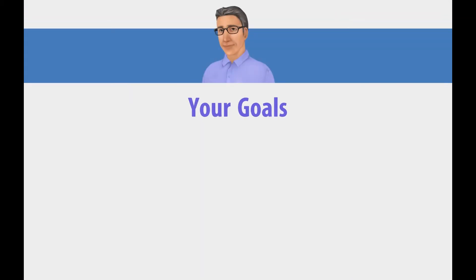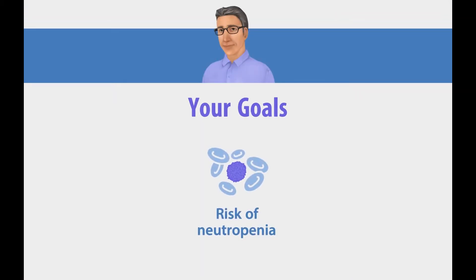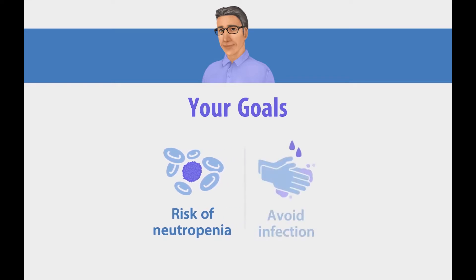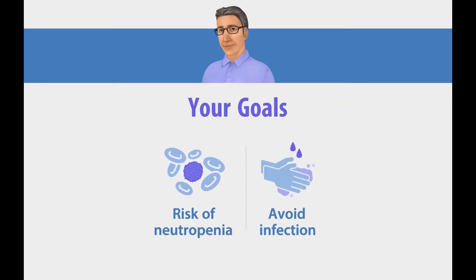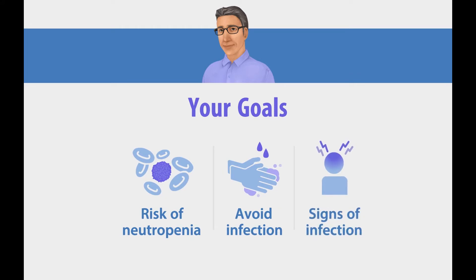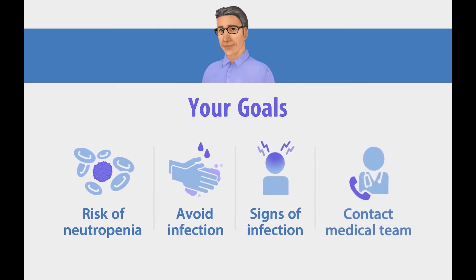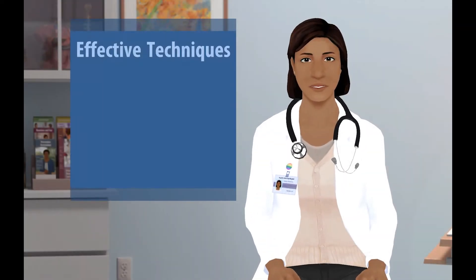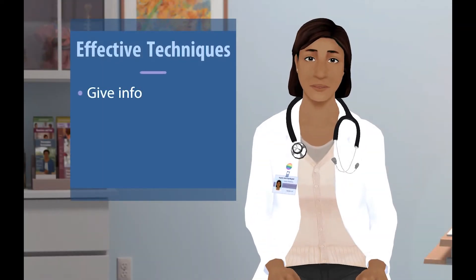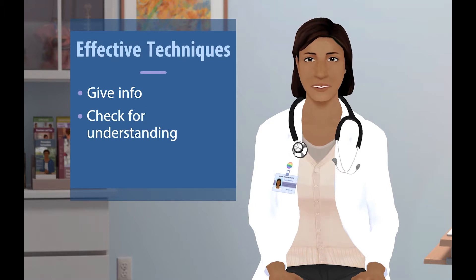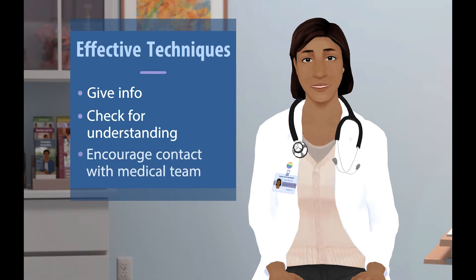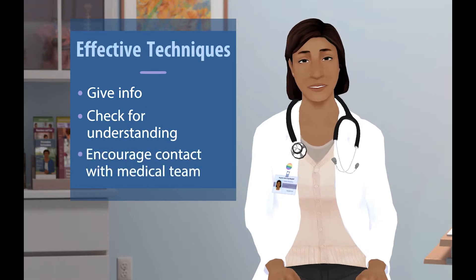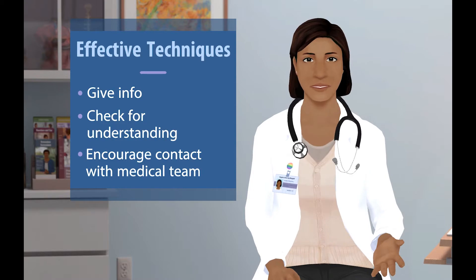Your goals during this conversation are to make sure Joseph understands the risk of neutropenia during chemo, ways to avoid infection — especially during his nadir — early signs of infection, and when to contact his medical team. You can accomplish these goals by providing Joseph with all the information he needs, doing frequent checks for understanding, and making sure he feels comfortable contacting his medical team with any questions or concerns.